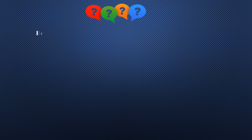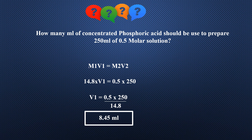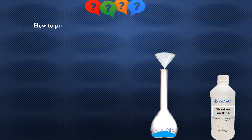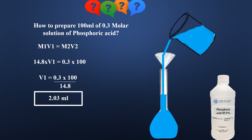Can you prepare these solutions of phosphoric acid now? How many milliliters of concentrated phosphoric acid should be used to prepare 250 milliliters of 0.5 molar solution? The answer is 8.45 milliliters. To prepare 100 milliliters of 0.3 molar solution of phosphoric acid: take 2.03 milliliters of concentrated phosphoric acid with a pipette into a 100 milliliter flask having a little water in it, and dilute the solution up to the mark. This gives 100 milliliters of 0.3 molar solution of phosphoric acid.